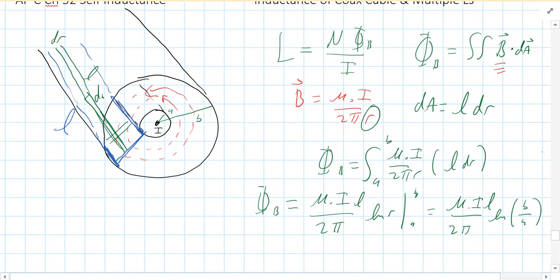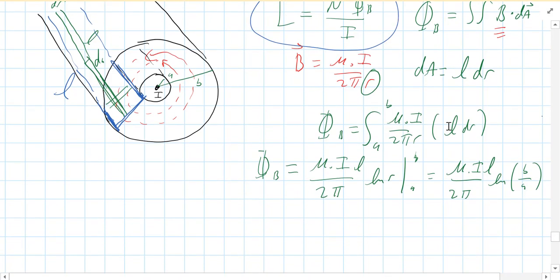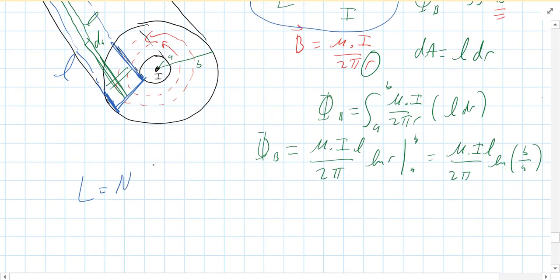Now L, so we're using this equation here for L. Now that's the easy part. L is equal to N, which is, I'll call it N, but it's one. The flux we just calculated, which is all this crazy stuff. Mu naught I L over 2 pi natural log of B over A divided by I.